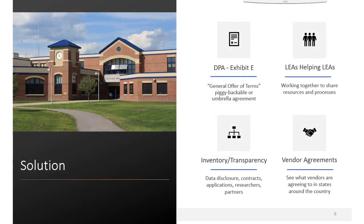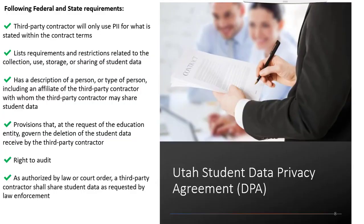We've come up with a few solutions with this project. We have created a data privacy agreement for the state of Utah. This has a lot of great exhibits on it that we'll go into in a little bit. Through the Utah Student Privacy Alliance, this creates a community of LEAs helping LEAs sign these agreements and create a registry of resources. It also allows for more inventory and transparency, and has a bit more weight where you can see what has been signed in other states. The Utah Data Privacy Agreement, or DPA, follows all federal and state requirements and we do have some specific to Utah. We're working on revising that right now and it will be sent out and available once complete.